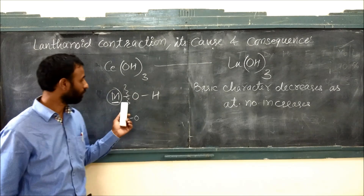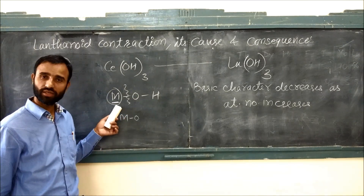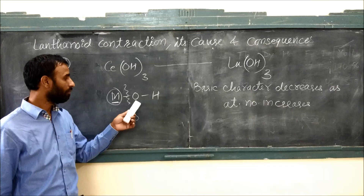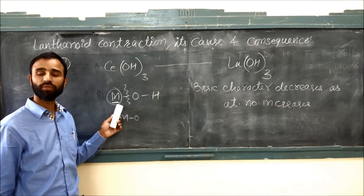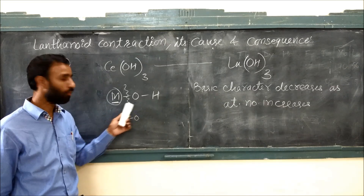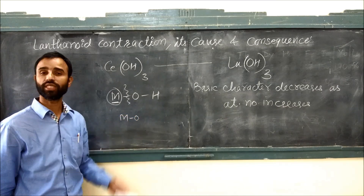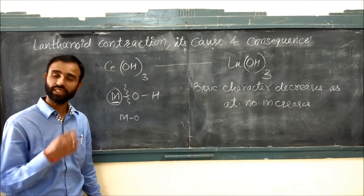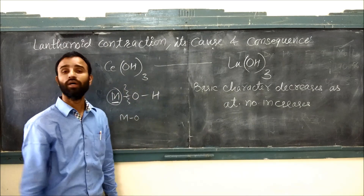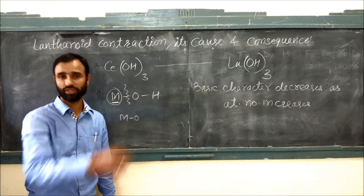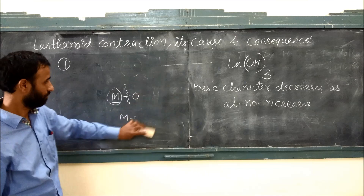As atomic number increases, size decreases. When size decreases, the metal-oxygen bond becomes stronger, so it cannot give OH⁻ ion easily. That's why the basic character of hydroxides decreases along the lanthanoid series.